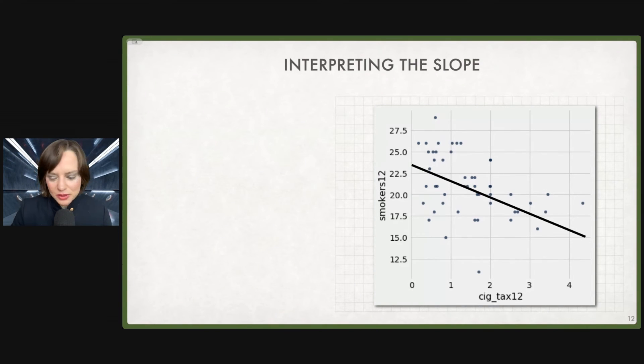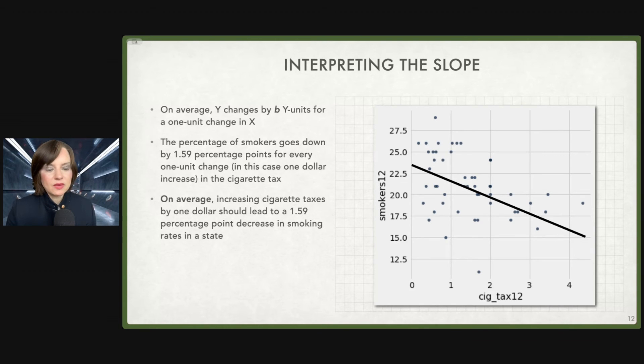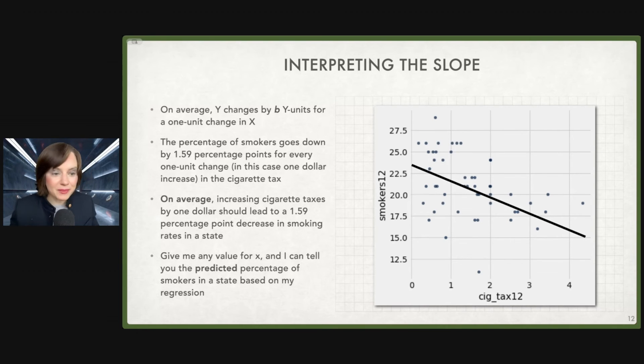So let's get into the slope a little bit more closely. So on average, Y changes by B units for a one unit change in X. So in other words, the percentage of smokers in our data goes down by, on average, 1.59 percentage points for every one unit change in X. In this case, every $1 increase in the cigarette tax. On average, increasing cigarette taxes in a state should lead to a 1.59 percentage point decrease in smoking rates in that state.